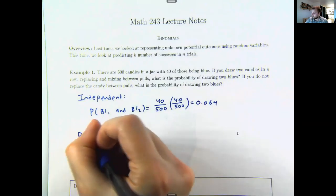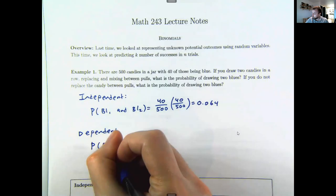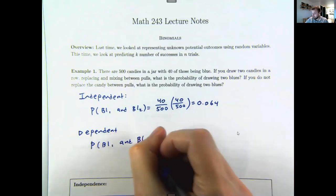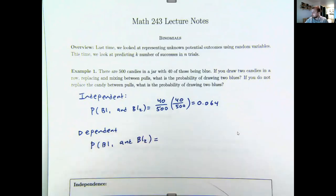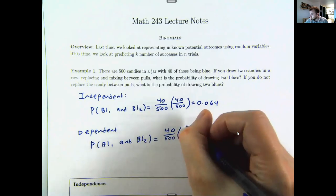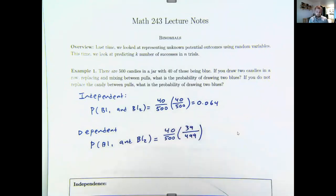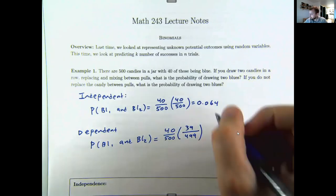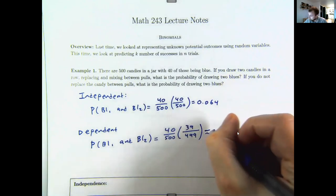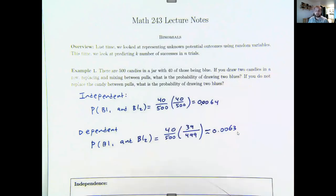Now consider the dependent scenario, where I eat the candy between pulls. I get a blue on the first and then consume it, so there's one less blue for the second draw. It starts at 40 out of 500, but after removing that candy I only have 39 blue left out of 499 total. Typing this into a calculator gives 0.0064.